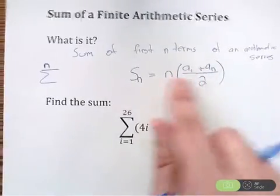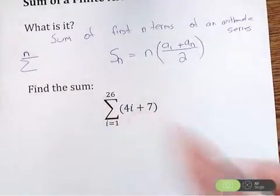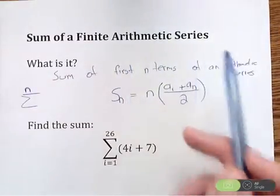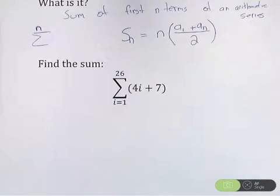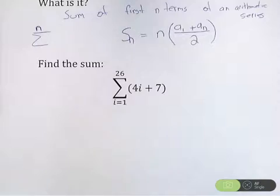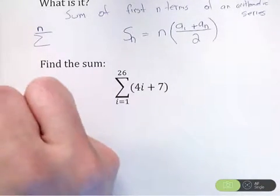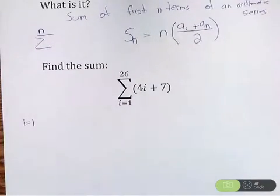So the first term plus the last term divided by 2 times whatever n is. This is our formula we could use to do the shortcut. This is only for finite arithmetic series. So in this problem it says find the sum. Well, first thing I want to know is, is this actually arithmetic? Because in the future we're going to be dealing with other series that have a different formula.